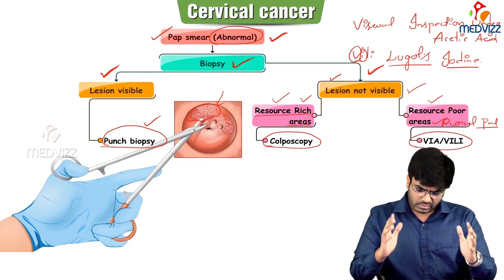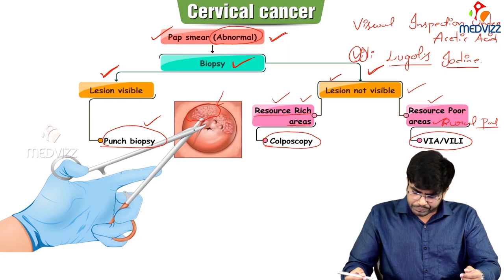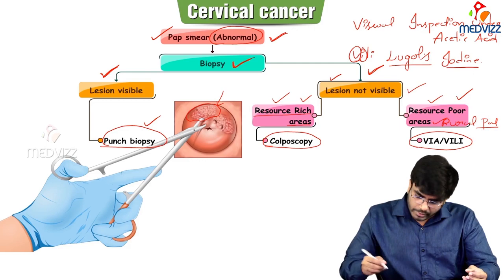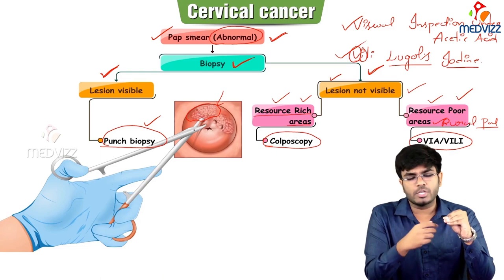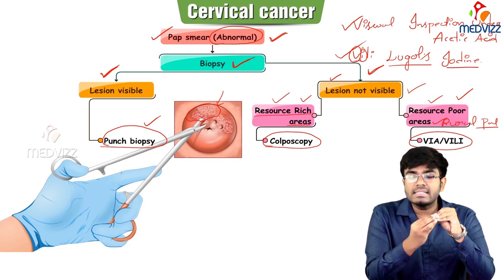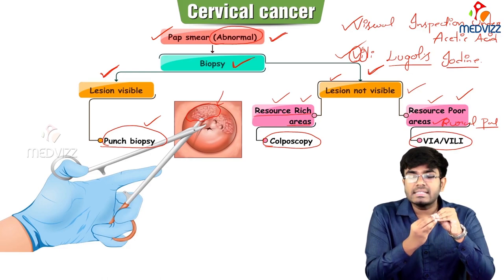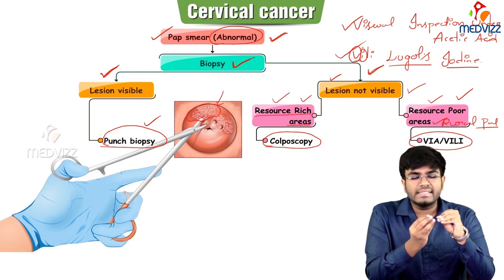In summary: if the lesion is visible, do a punch biopsy. If the lesion is not visible in an urban setting, use colposcopy — a magnification device that magnifies the cervix up to 30 times — and after applying acetic acid, the dysplastic cells appear aceto-white, then take a biopsy from there. In a rural setting, use VIA — acetic acid makes dysplastic cells appear aceto-white — and VILI — Lugol's iodine makes normal cells brown and dysplastic cells remain yellow.